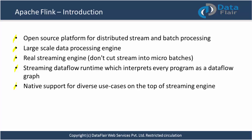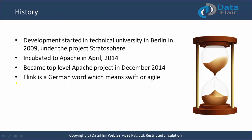Regarding the history of Apache Flink, development started at the Technical University of Berlin in 2009 under the project name Stratosphere. It was later incubated into Apache in April 2014 and became a top-level project in December 2014. Flink is a German word meaning swift or agile, and its squirrel logo fits the Hadoop ecosystem tradition of using animal mascots.